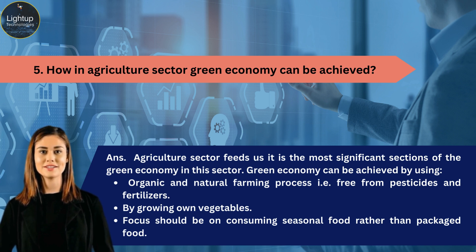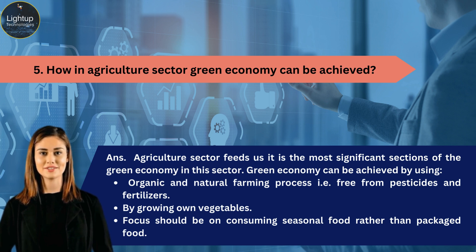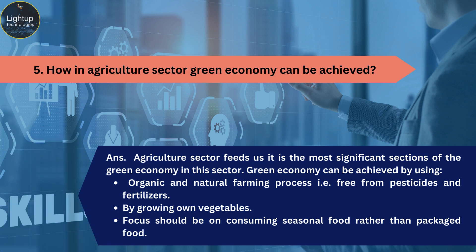How can green economy be achieved in the agriculture sector? The agriculture sector feeds us and is the most significant section of the green economy. Green economy can be achieved here by using organic and natural farming processes free from pesticides and fertilizers, by growing vegetables, and by focusing on consuming seasonal food.